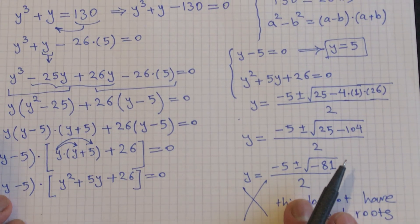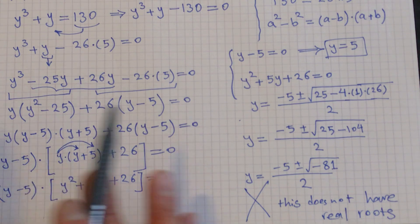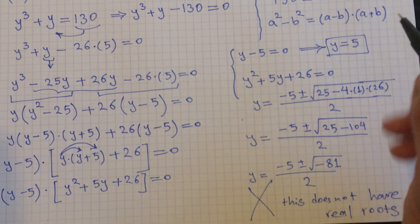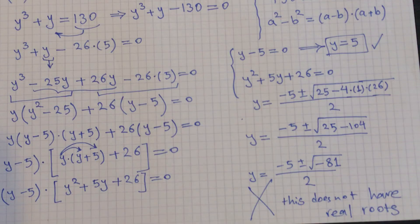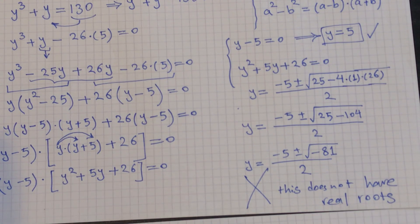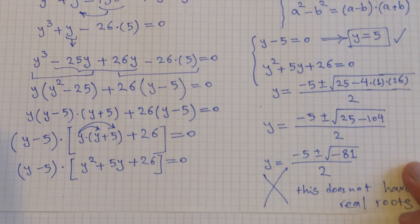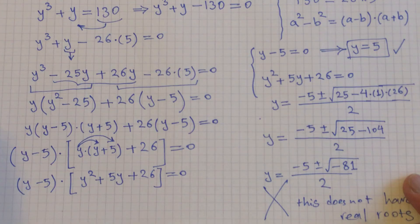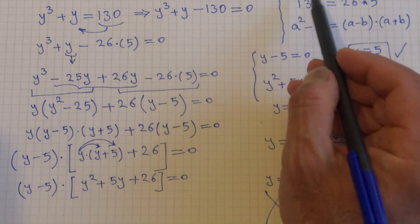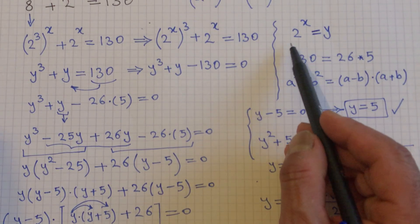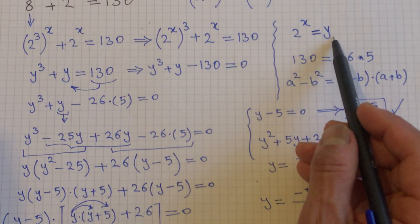Since the discriminant is negative, this second equation has only imaginary roots. We are looking for real solutions, so we ignore this equation. The only real root for the entire equation is y equals 5.